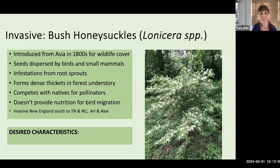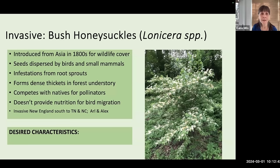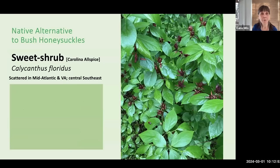Bush honeysuckle was introduced from Asia in the 1800s for wildlife cover. Its seeds are dispersed by birds and small animals, forming dense thickets in the forest understory. The blossoms tend to lure pollinators away from desirable native plants, and the fruit of honeysuckles will not provide proper nutrition for bird migration. These plants are now invasive from New England south all the way to Tennessee and North Carolina. I would recommend, as a shrub with fragrant flowers, sweet shrub — also known as Carolina allspice, Calycanthus floridus.